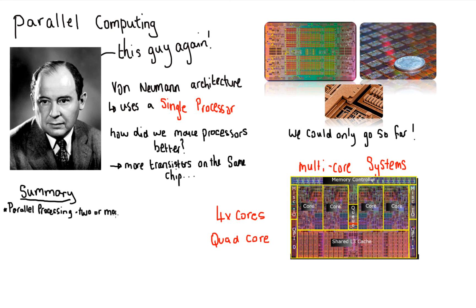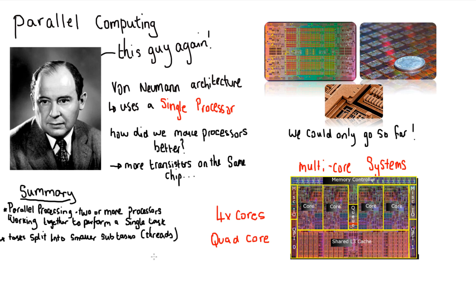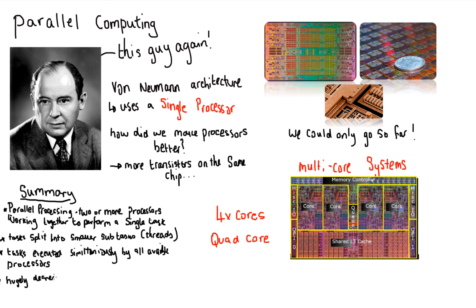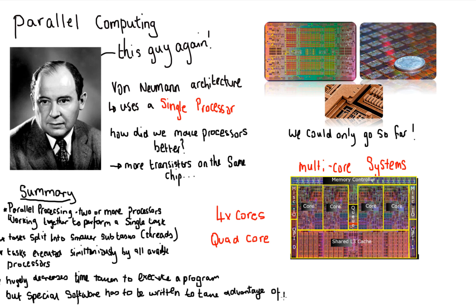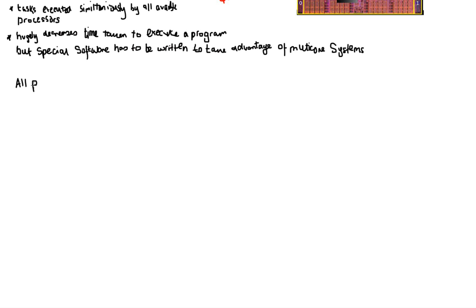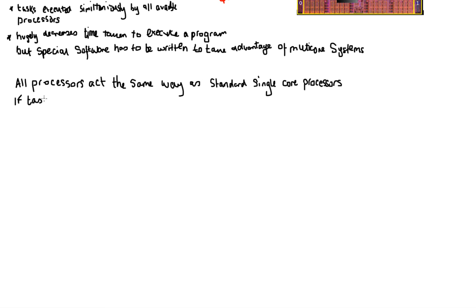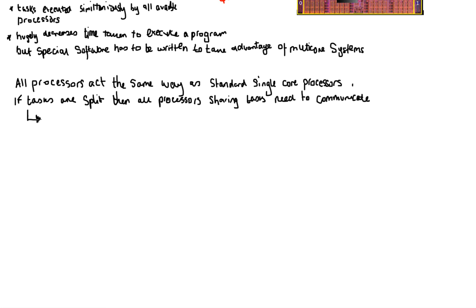Let's have a quick summary on parallel computing. When we say parallel computing or parallel processing, it means two or more processors are working together to perform a single task split up into smaller subtasks — referred to in computer science as threads. Each task is executed simultaneously by all of the available processors. The benefit is that it hugely decreases the time taken to execute a program, but special software has to be written to take advantage of the multi-core system. All processors in multi-core systems act the same way as a standard single core processor.